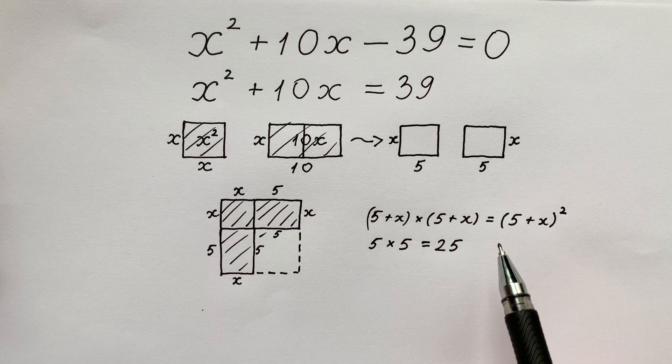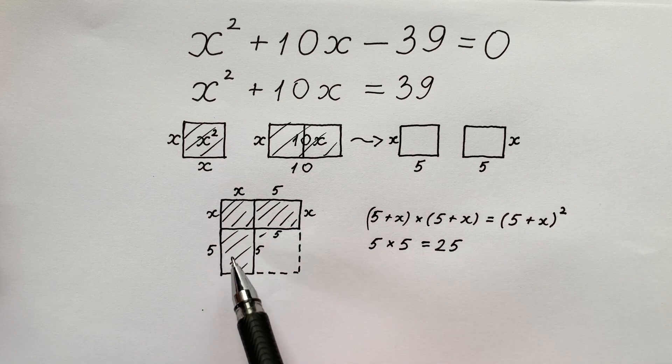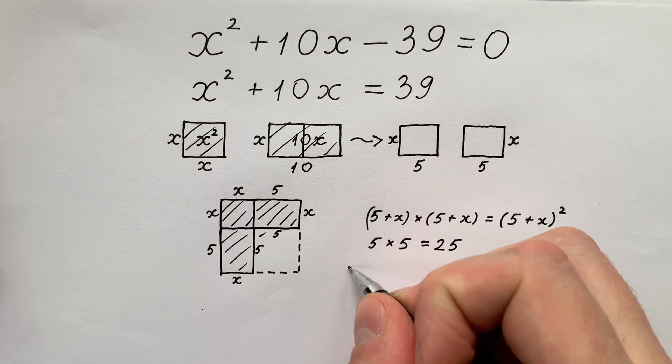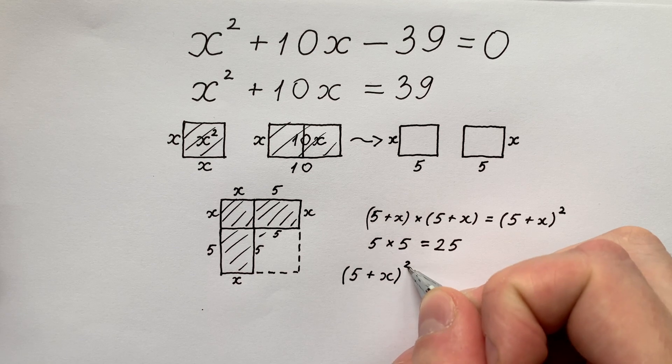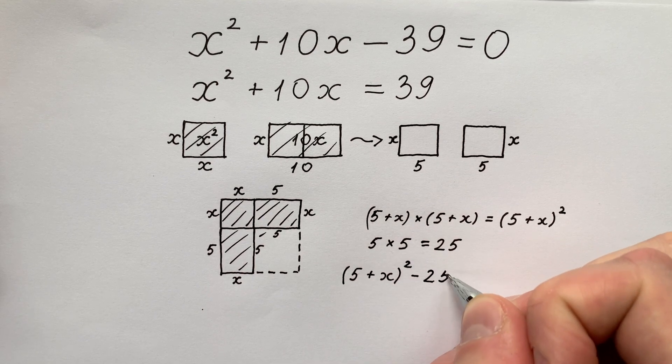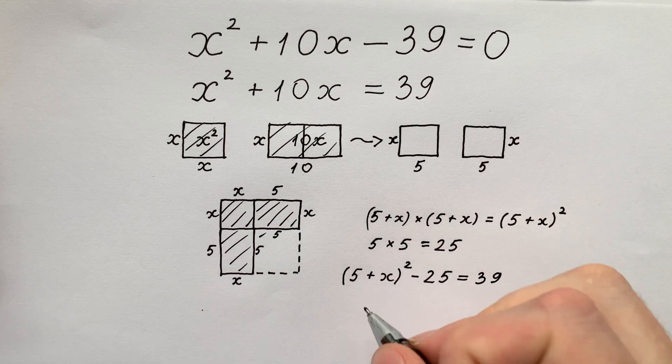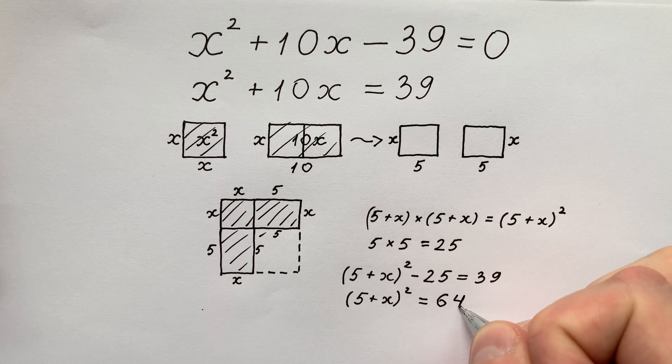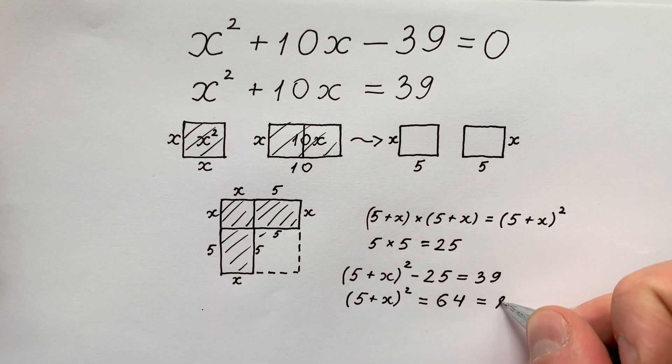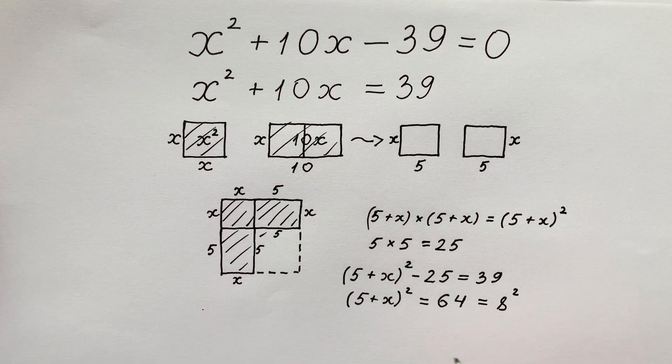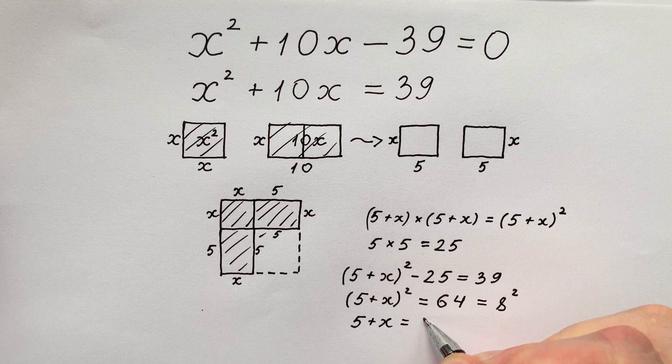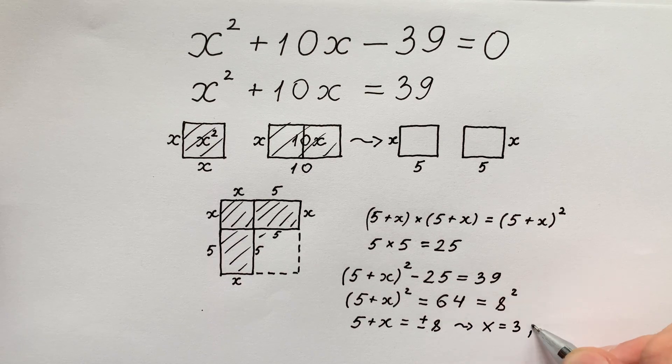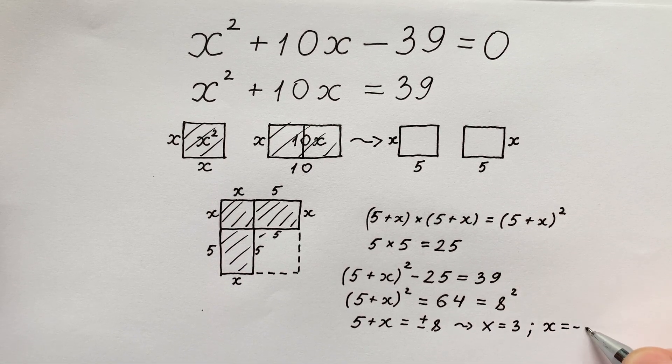And the difference between these two areas is our desired area which equals to 39. That's why we can write that 5 plus x squared minus 25 equals to 39, or 5 plus x squared equals to 64. 64 equals to 8 to the power of 2. So from this moment we get that 5 plus x equals to plus or minus 8. And in this case the first x equals to 3 and second x equals to minus 12.